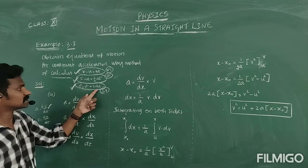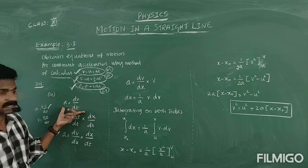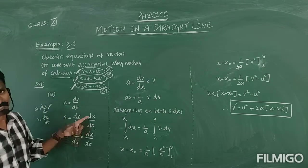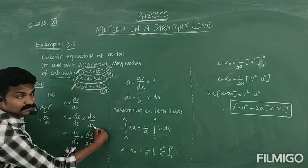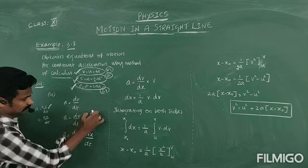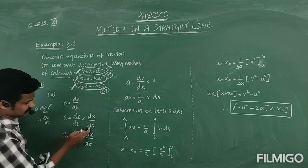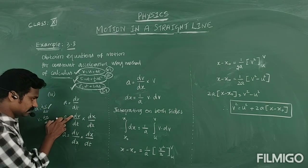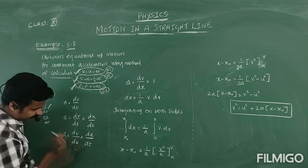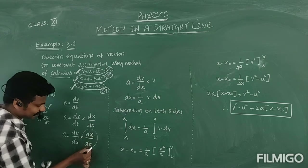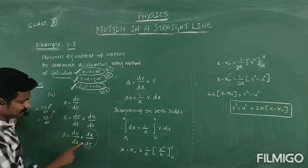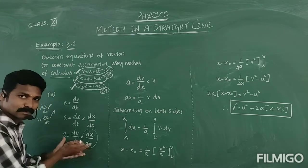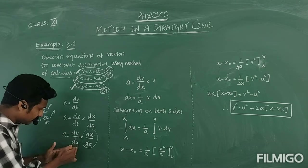Since we need position X but the time factor must be eliminated, we multiply and divide by the change in position DX. So in the same equation, multiply and divide by DX. Then DX and DT rearrange: we get DV divided by DX, multiplied by DX divided by DT. And DX divided by DT is velocity. Therefore, acceleration equals DV divided by DX times velocity.